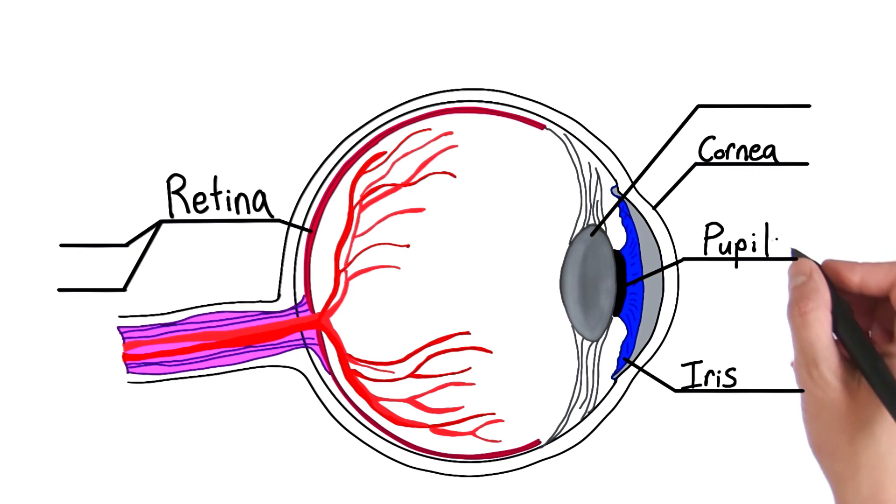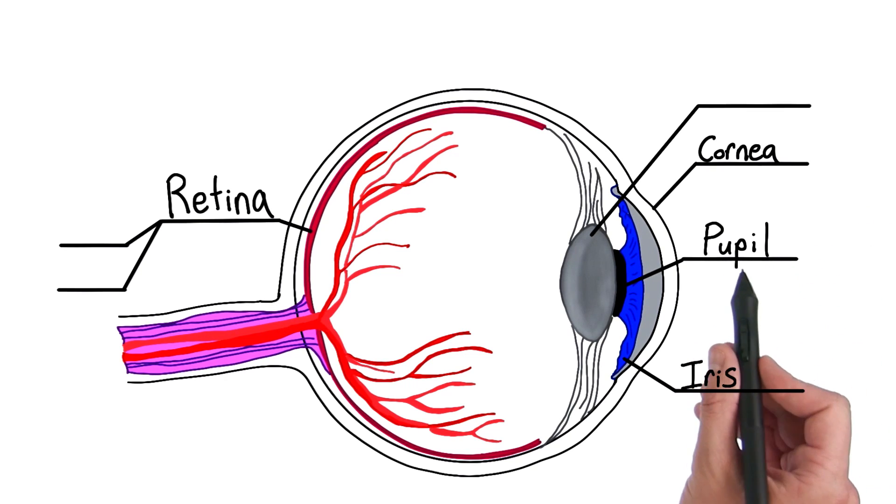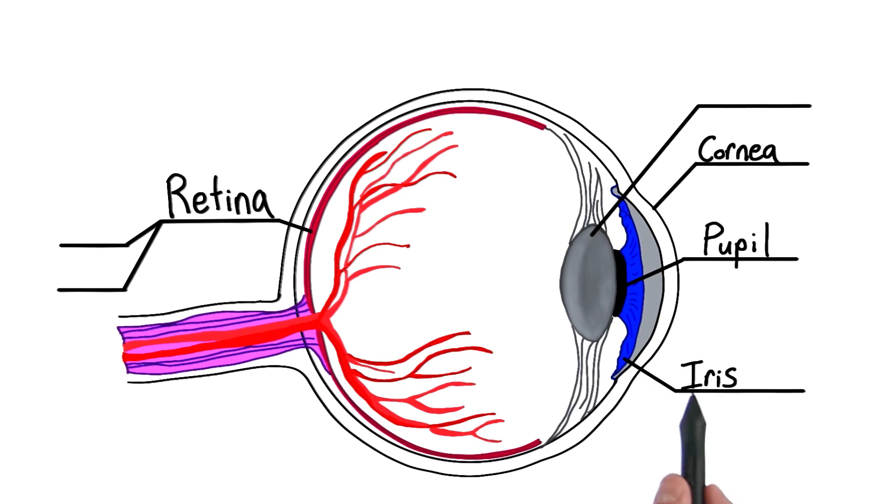And when it's dim, you'll notice that your pupils tend to be pretty big. Versus when it's bright out, they tend to be pretty small because they don't need as much light.